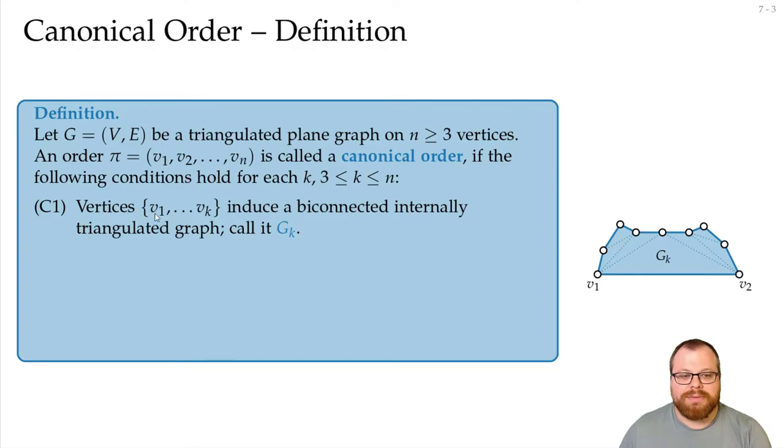The vertices v1 to vk, that's our subgraph Gk, they induce a biconnected internally triangulated graph. So this graph has to be biconnected, that means if I remove any vertex of it, then it's still connected. But it also has to be internally triangulated, so every interior edge has to be a triangle.